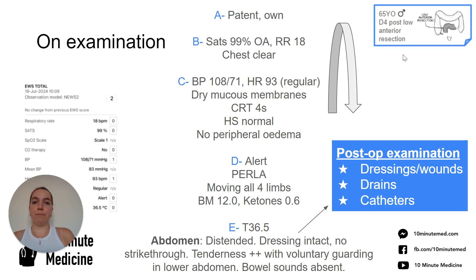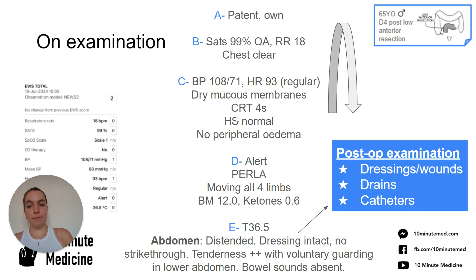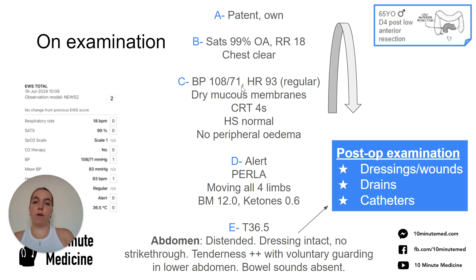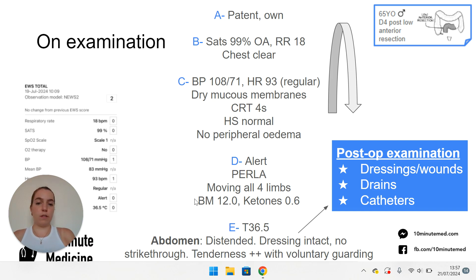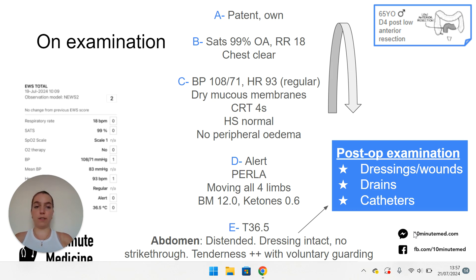So we do an A to E. His respiratory rate and saturations are okay and his chest sounds clear. Cardiovascularly, his blood pressure is a smidge on the low side and his heart rate is a smidge on the high side, which could just be a post-op pain response, but you're also thinking about dehydration, bleeding, infection, etc. He appears dehydrated with a slightly raised cap refill time. Neurologically intact. Examining his abdomen, he's got a distended abdomen, tender throughout with some voluntary guarding, especially in his lower abdomen, but his dressing is intact and there's no strikethrough — no blood on the dressing at all.